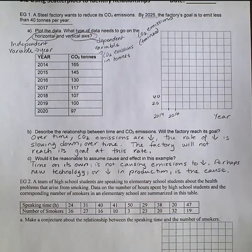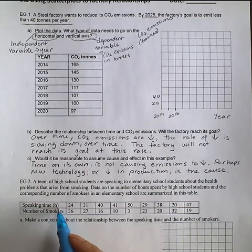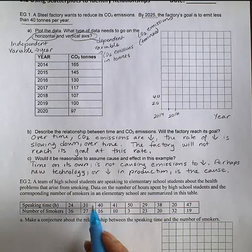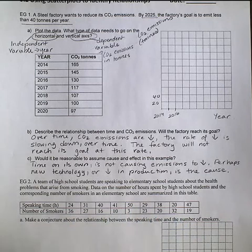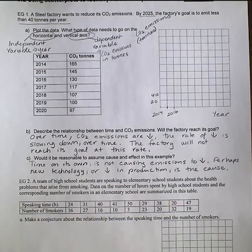Example 2. A team of high school students are speaking to elementary school students about the health problems that arise from smoking. Data on the number of hours spent by high school students, and the corresponding number of smokers in an elementary school are summarized in this table. So here, this table shows the speaking time in hours and the number of smokers, and that would be for each school. So each of these data points would represent a particular elementary school. We're asked to make a conjecture about the relationship between speaking time and the number of smokers. So again, I'd like you to pause the video and think about a conjecture. If you're not sure what a conjecture is, a conjecture is a hypothesis. What do you think will happen? What do you think the relationship between the variables might be?